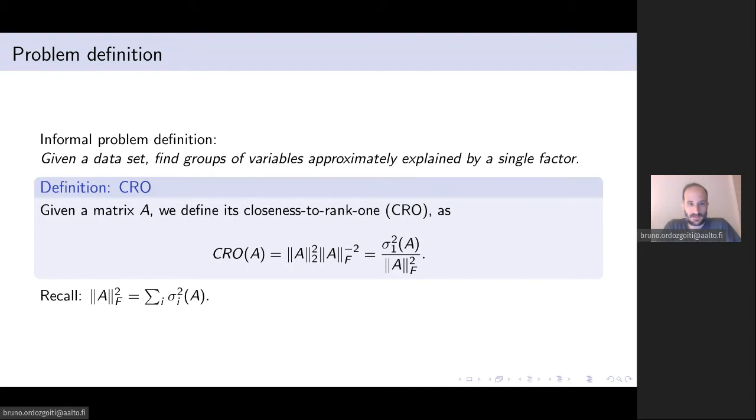For this we define the concept of CRO. Given a matrix A we define its closeness to rank one, CRO, as written here. This is the ratio between the square of the first singular value of the matrix and the square of the Frobenius norm. Remember that the Frobenius norm squared is equal to the sum of the squares of the singular values. This ratio quantifies the extent to which this matrix can be explained by the first singular vector.